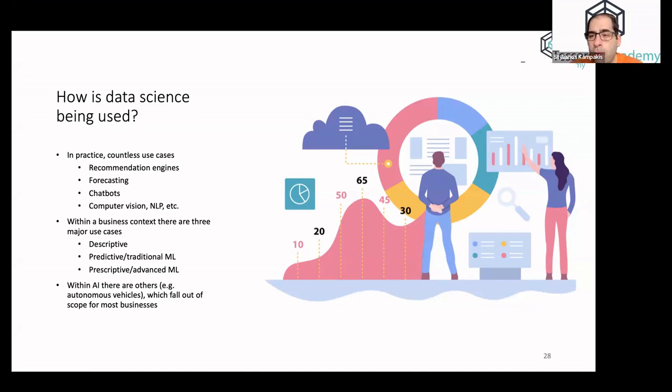However, in reality, we can break them down into three parts. If you want to go down the rabbit hole of use cases, you're going to find recommender systems, forecasting, chatbots, computer vision, you name it. However, within a business context, in most cases, let's say 90% of the cases, we talk about descriptive applications, predictive or prescriptive.